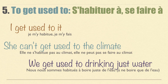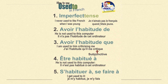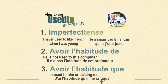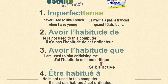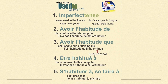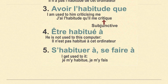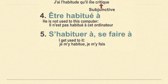In this lesson we saw five forms for how to translate 'used to' and all related expressions. You can download a summary image from frenchspanishonline.com. To recap: in the past tense, use l'imparfait for duration; for 'to be used to' in the present, use avoir l'habitude de (with de), or avoir l'habitude que (followed by the subjunctive), or être habitué à (with à); and for 'to get used to', use the reflexive verbs s'habituer à or se faire à.